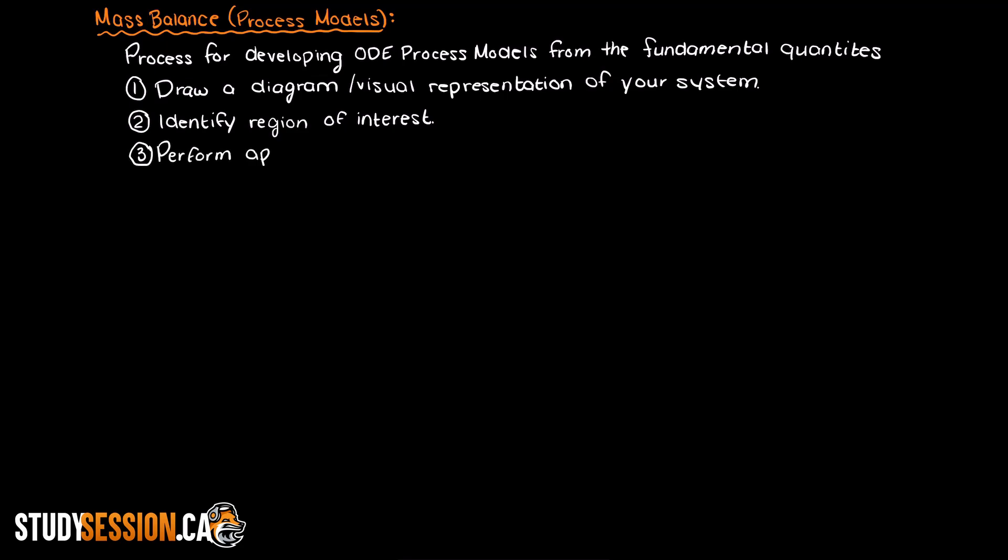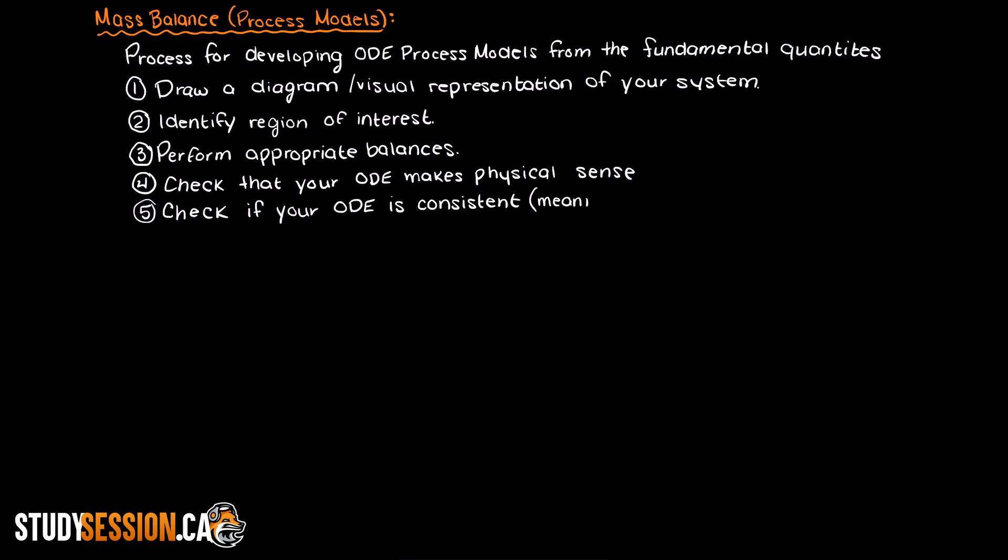Perform the appropriate balances, then we check our ODEs to make sure they make physical sense and then we check to see that our ODEs are consistent and that there are zero degrees of freedom. Just keep this list in mind as we work through the rest of the video. And if you are solving some problems on your own, consider writing this list down so you don't have to rush ahead and don't forget any important steps.